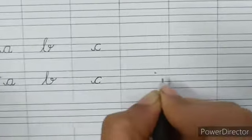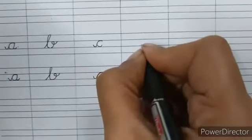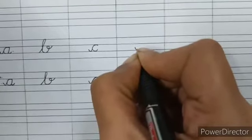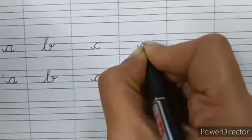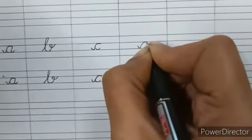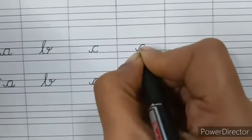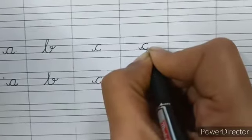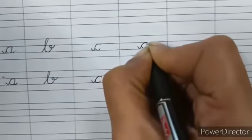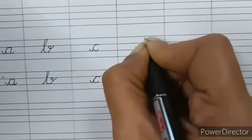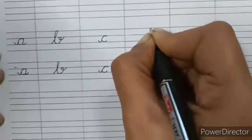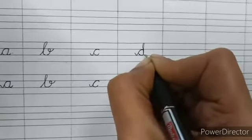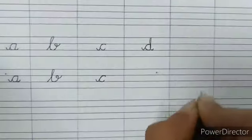Next letter is D. It starts with a small curve. Draw C, which goes to the second line. Then the curve comes down and touches the third line. From here, go upwards and draw a vertical line till the first line. Give a small bend backward. Then come down again till the third line, and before it touches the third line, give a finishing curve. This is D.